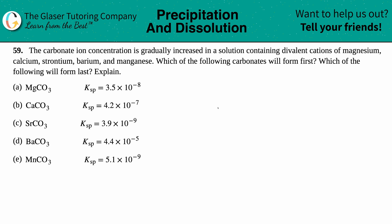Number 59: the carbonate ion concentration is gradually increased in a solution containing divalent cations of magnesium, calcium, strontium, barium, and manganese. Which of the following carbonates will form first, which will form last, and explain?